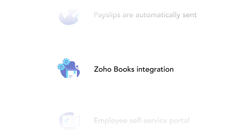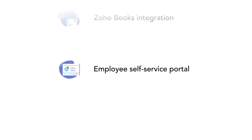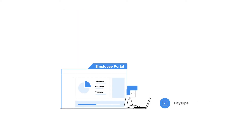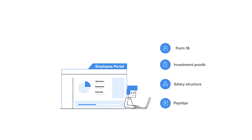On top of all this, Zoho Payroll provides an employee self-service portal where employees can log in to see their salary slips, salary structure, add their investment proofs, download Form 16, and a lot more — all from their smartphone.